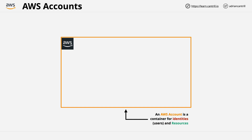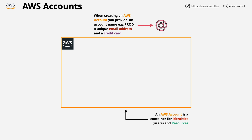When you create an AWS account, you give the account a name, you need to provide a unique email address, and you also need to provide a payment method, which is generally a credit card. The credit card can be used for multiple AWS accounts, but the email address can't — it has to be unique. You need one unique email address for every AWS account.